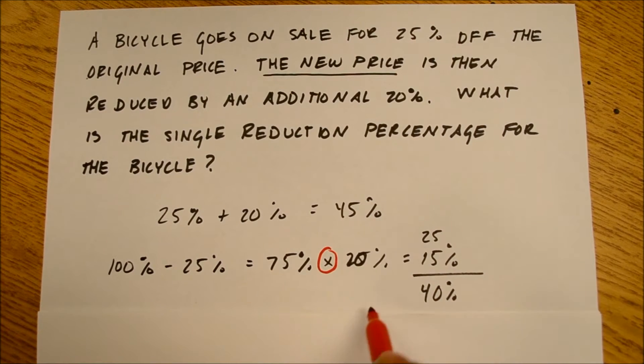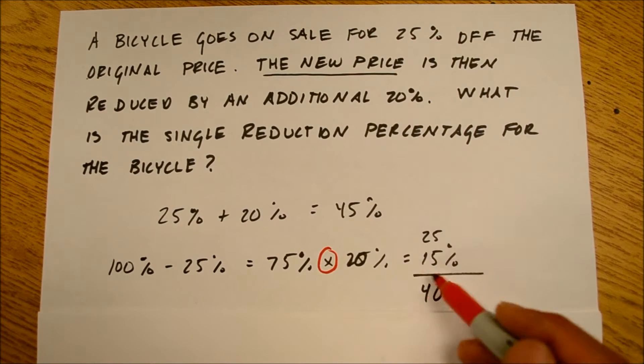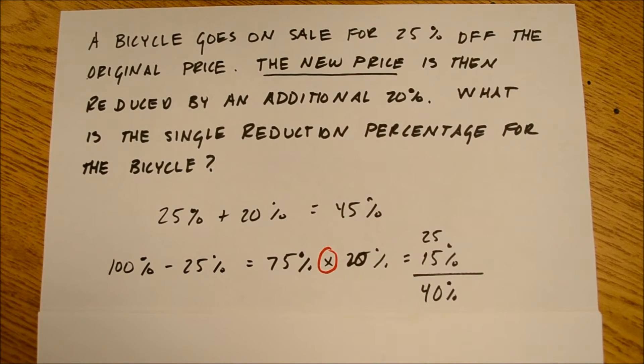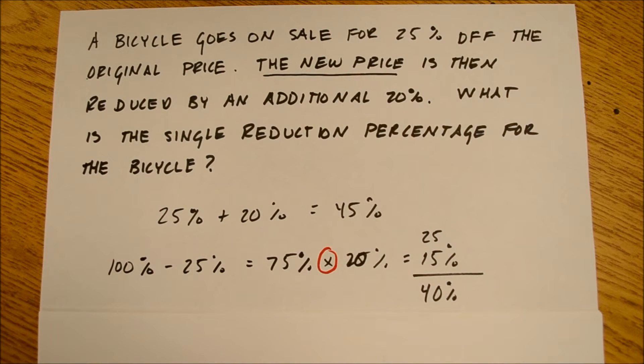75% times 20% is 15%. You add the two and you get 40%. And some of the kids got that. Some of them didn't. And the ones that got it, I still don't know if they understand why it works.